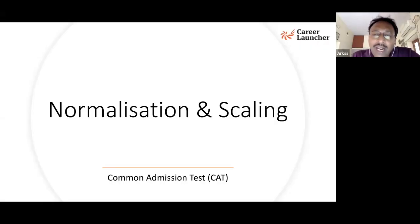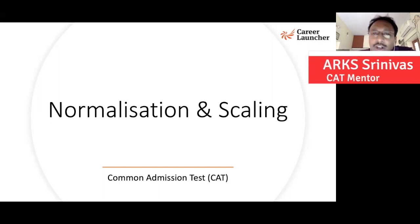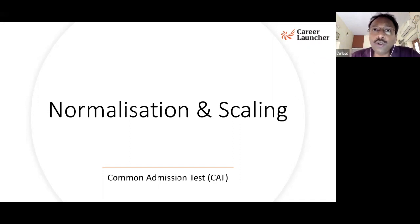Tomorrow you are going to write the CAT 2021. There are three slots, and there is always a worry that whether your slot will be easy or difficult. If your slot is easy, what will happen to your scores if others get easier and therefore higher marks? Similarly, what if you get higher scores but they're considered lower because somebody else's slot was a difficult slot?